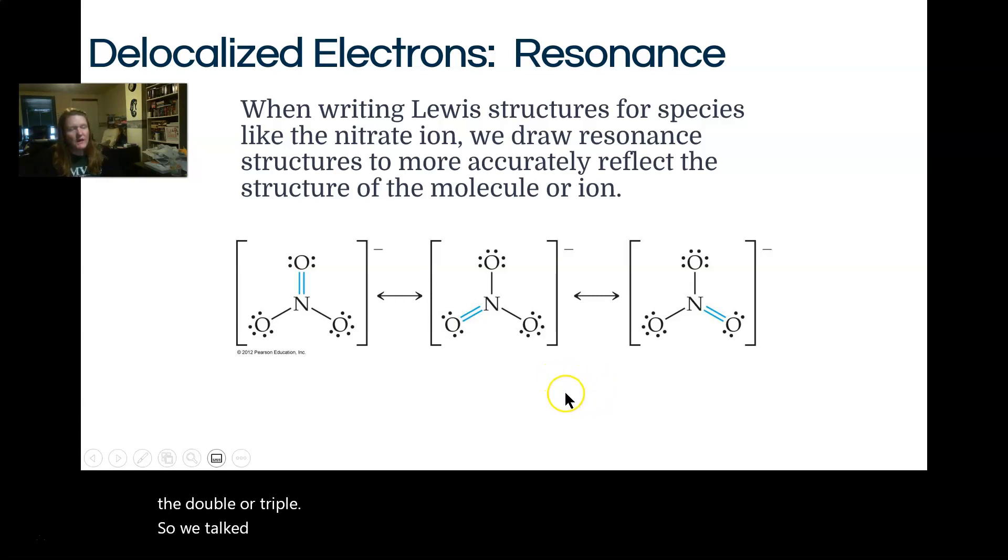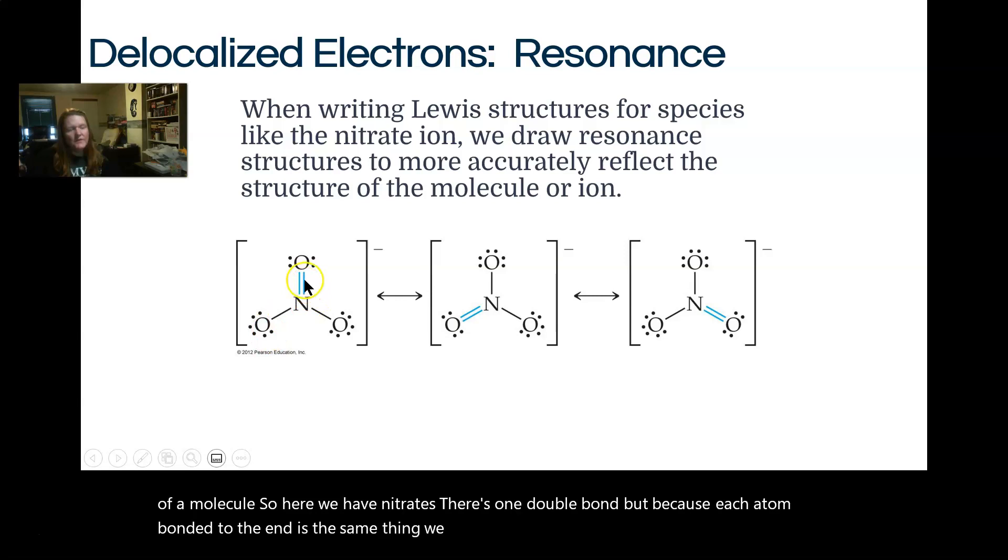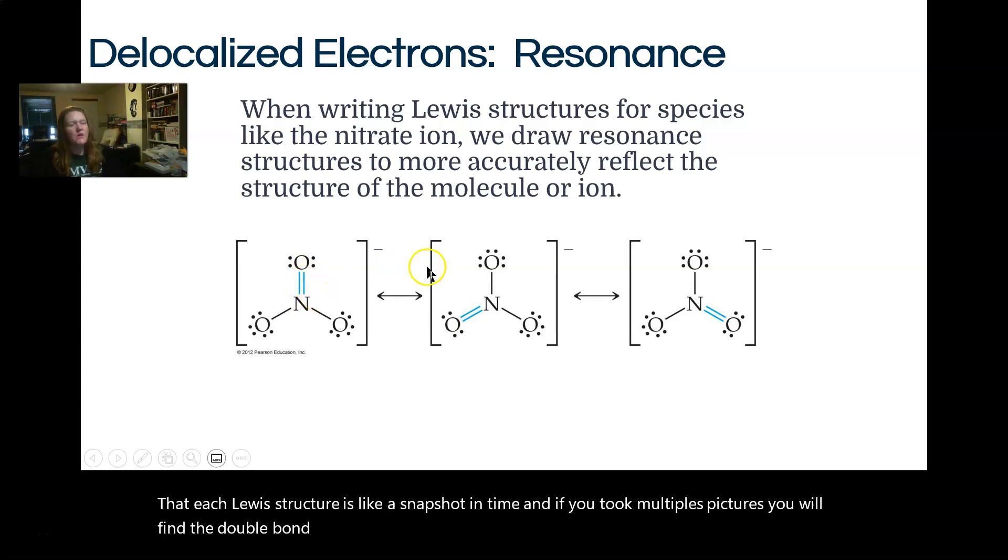So we talked before about resonance and about how it just means you're moving double bonds around. For our purposes, any pi electrons can be resonance, part of your delocalized structure, delocalized meaning shared across the larger area of the molecule. So here we have nitrate. There's one double bond, but because each atom bonded to the N is the same thing, we can put the double bond in between any of these oxygens and nitrogens, which means that each Lewis structure is like a snapshot in time.